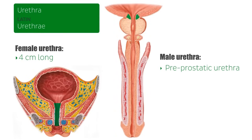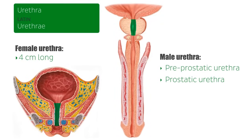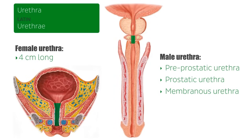The prostatic urethra is about 3 to 4 centimeters long, is continuous with the pre-prostatic urethra, and runs through the length of the prostate. The membranous urethra begins upon exiting the prostate, is about 1 to 1.5 centimeters long, and is surrounded by the external urethral sphincter muscle.